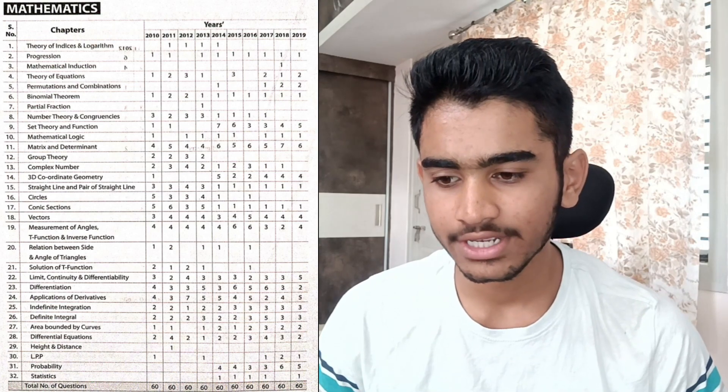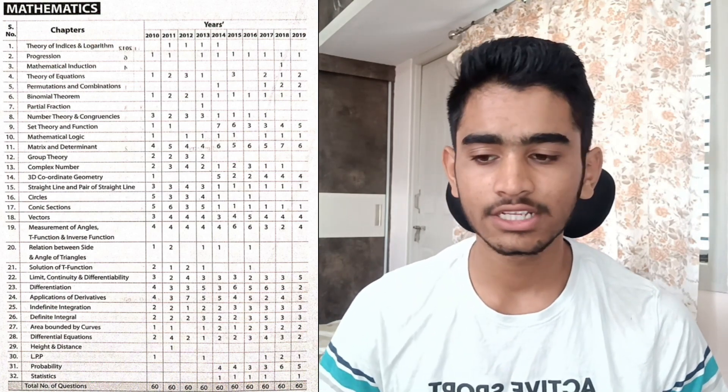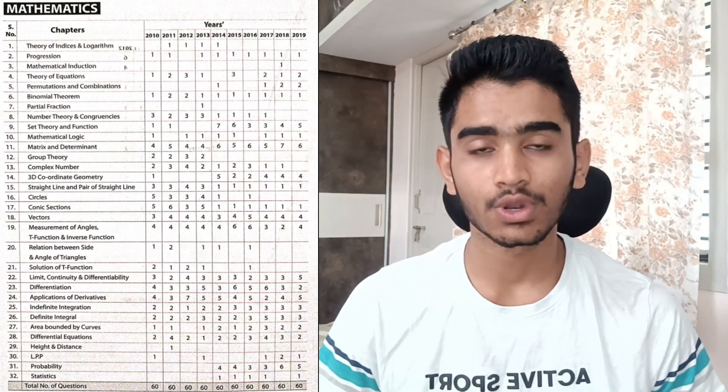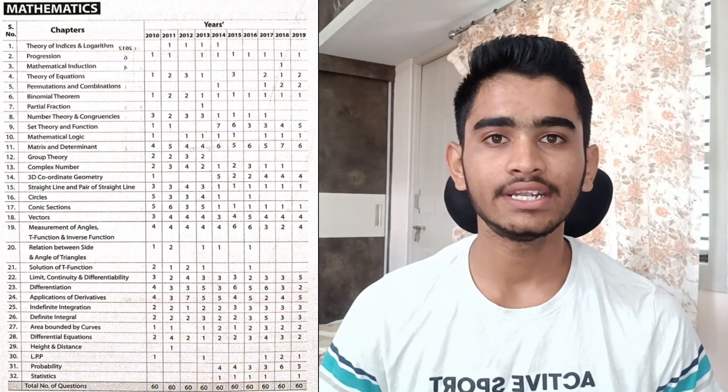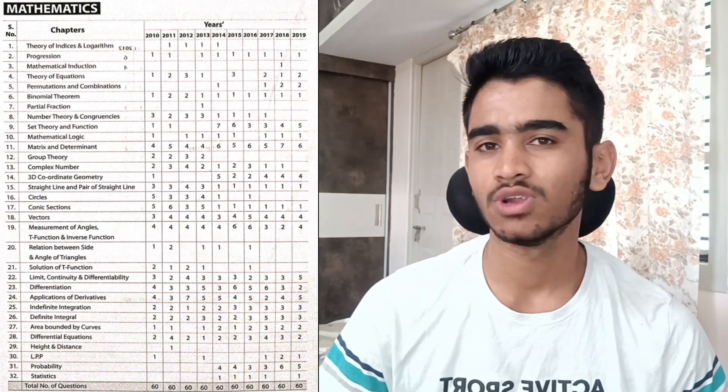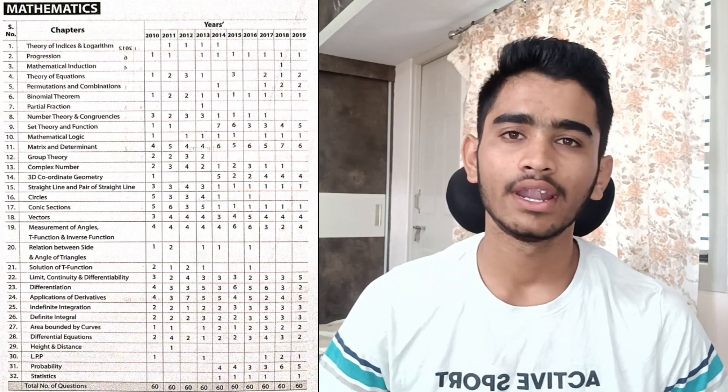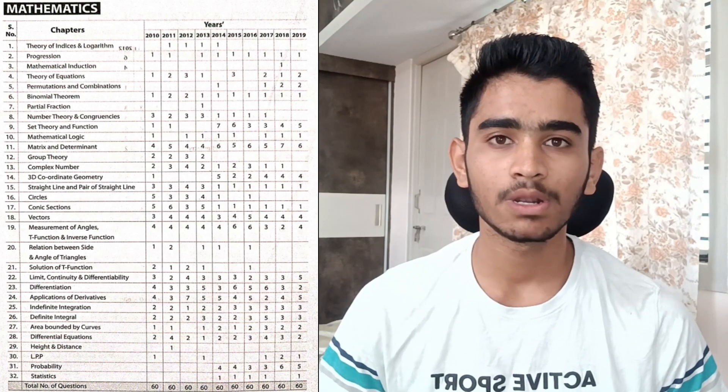Another chapter is 3D and Coordinate Geometry. This vectors part and 3D geometry contains around 4 plus 4, that's 8 marks in three consecutive years, making it a must-read.